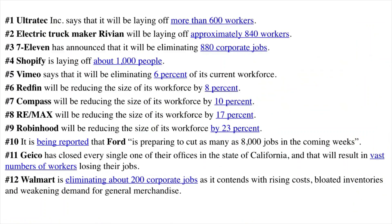This is a list of companies announcing layoffs, just after the GDP report showed a contraction in the economy for the second quarter. The numbers: 600 workers from one company; Rivian, 840 workers; 7-Eleven, 880 corporate jobs; Shopify, 1,000 people; Vimeo, 6% of its current workforce; Redfin, 8%; Compass, 10%; RE/MAX, 17%; Robinhood, 23%; Ford, 8,000 jobs. These are small numbers in the overall US picture because it's a huge country, but they paint a picture. And again, we just had a GDP report showing a contraction for the second quarter.